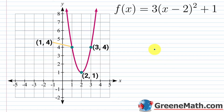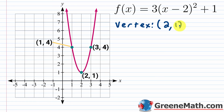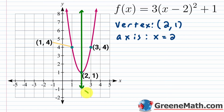One main benefit to writing a quadratic function in vertex form is graphing. Looking at f of x equals 3 times the quantity x minus 2 squared plus 1, I immediately know the vertex occurs at h comma k, which is 2 comma 1. The axis of symmetry is at x equals h, so x equals 2. You can draw that in — that vertical line at x equals 2 is your axis of symmetry. You can also easily get points using graphing transformations.